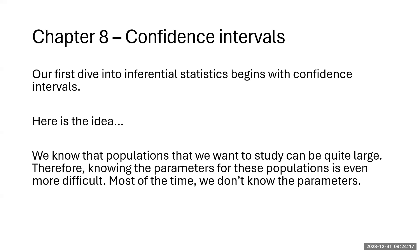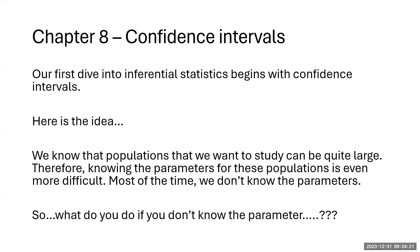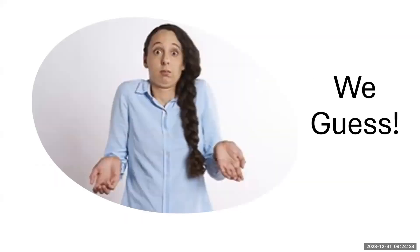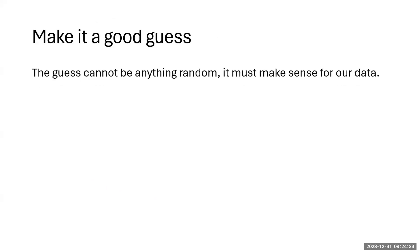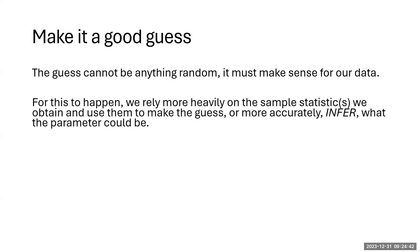So what do you do if you don't know the parameter? The answer is we guess — but it can't just be a random guess. We can't just throw a dart at a dartboard and use whatever number it lands on. It's got to make sense for the data we're looking at. So what we have to do is take a sample. The sample is what we can literally put our hands on — whether it's a group of individuals or other objects or data points from a spreadsheet or database.